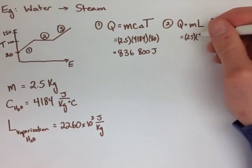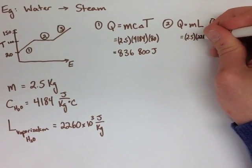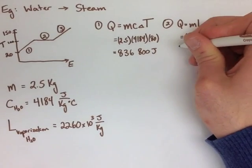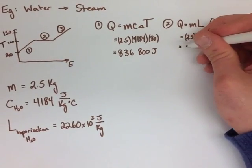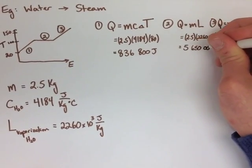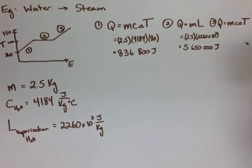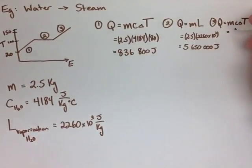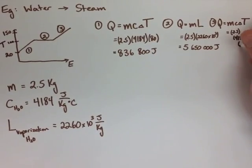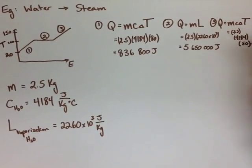Then when we find our latent heat changing it from water to steam, we find that we need 5,650,000 joules of energy. Now we need to increase the temperature again from 100 degrees to 150 degrees, and this is a difference of 50 degrees Celsius, we find that we need 523,000 joules of energy.